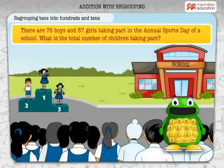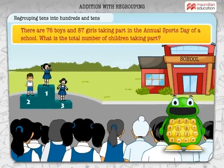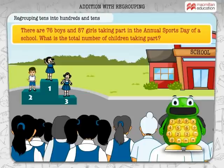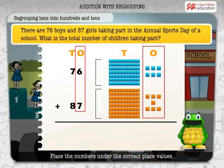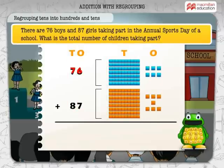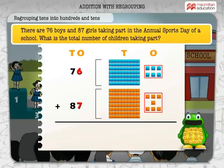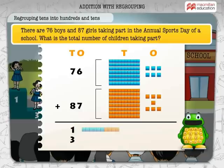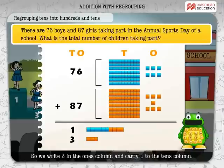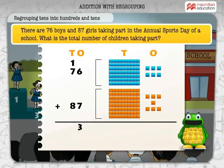There are 76 boys and 87 girls taking part in the annual sports day of a school. What is the total number of children taking part? Place the numbers under the correct place values. 76 has 7 tens and 6 ones, and 87 has 8 tens and 7 ones. Add the ones: 6 plus 7 is equal to 13. But we need to regroup 13 as 1 ten and 3 ones. So, we write 3 in the ones column and carry 1 to the tens column.